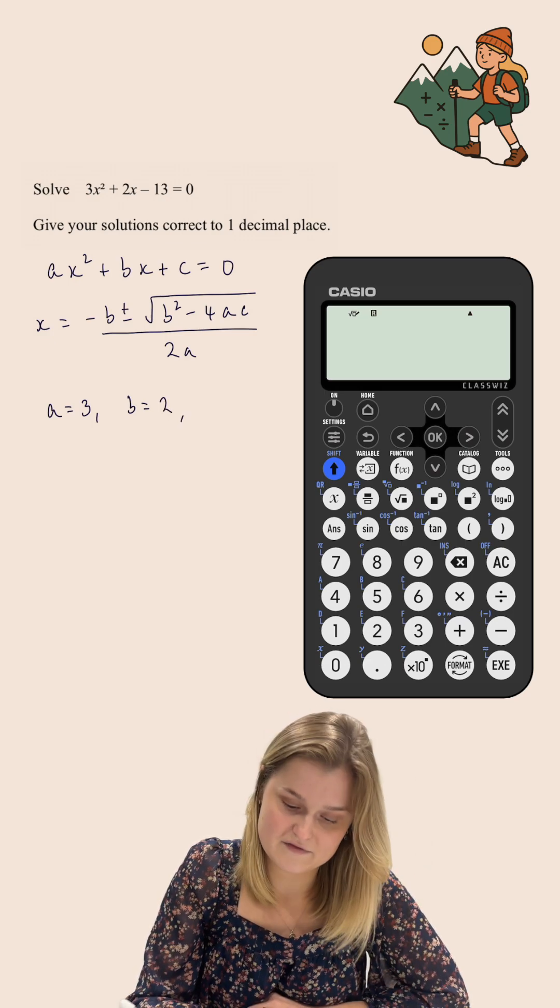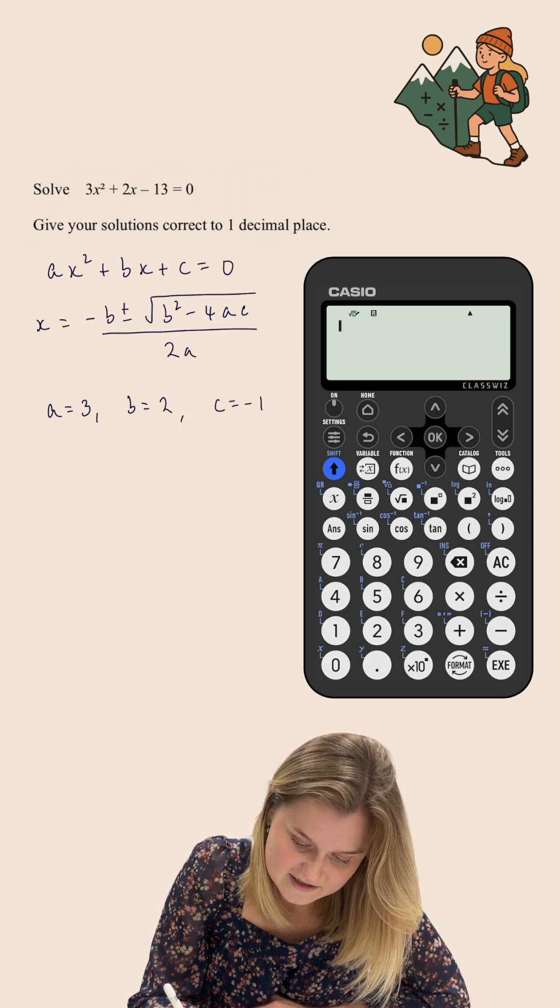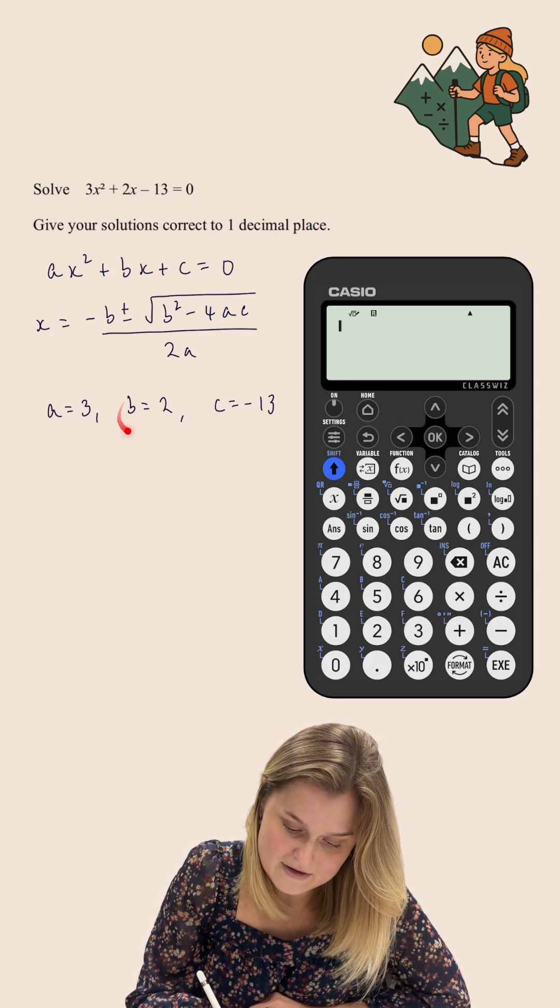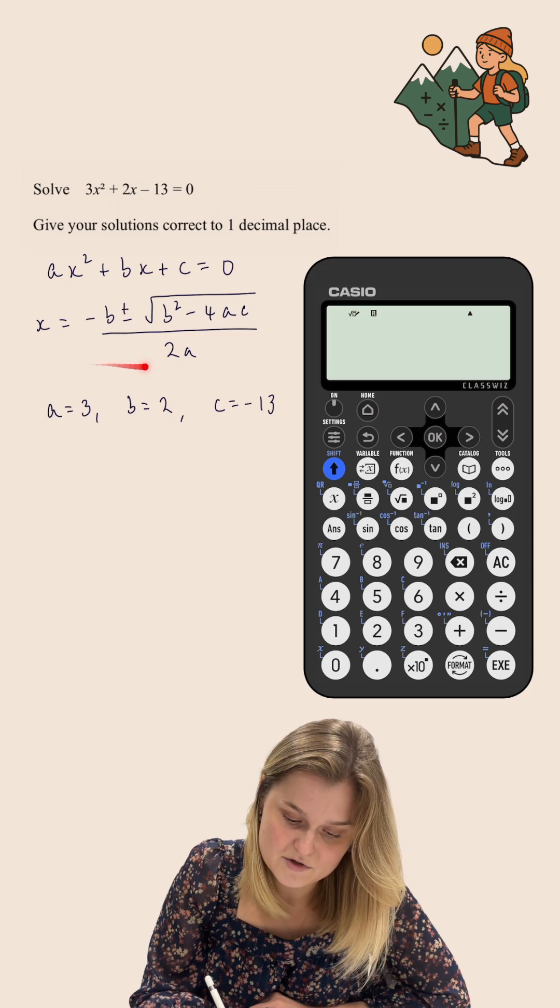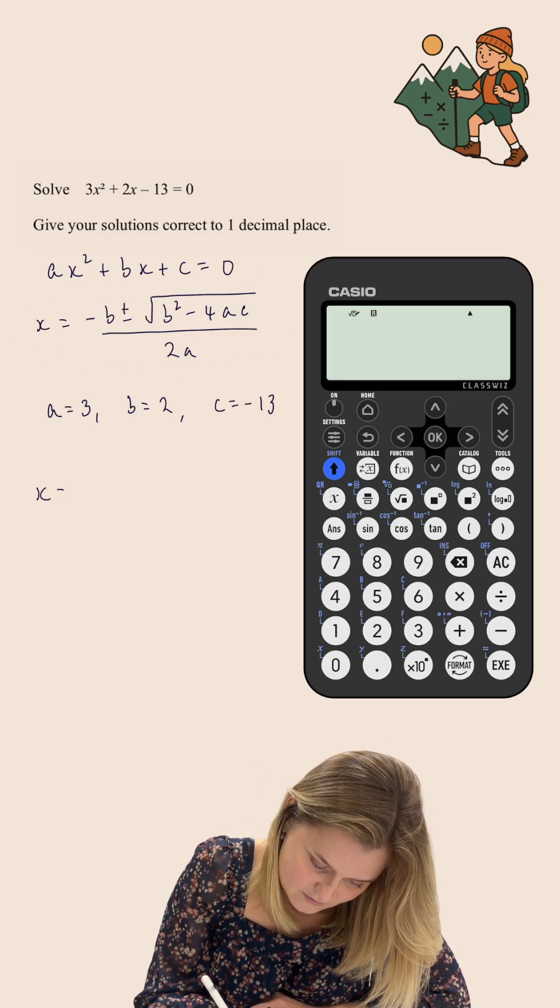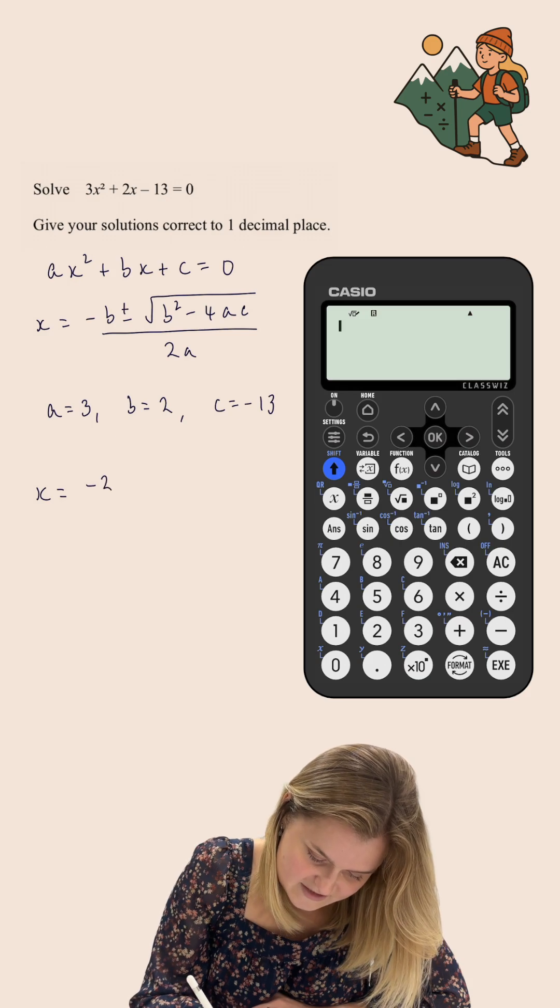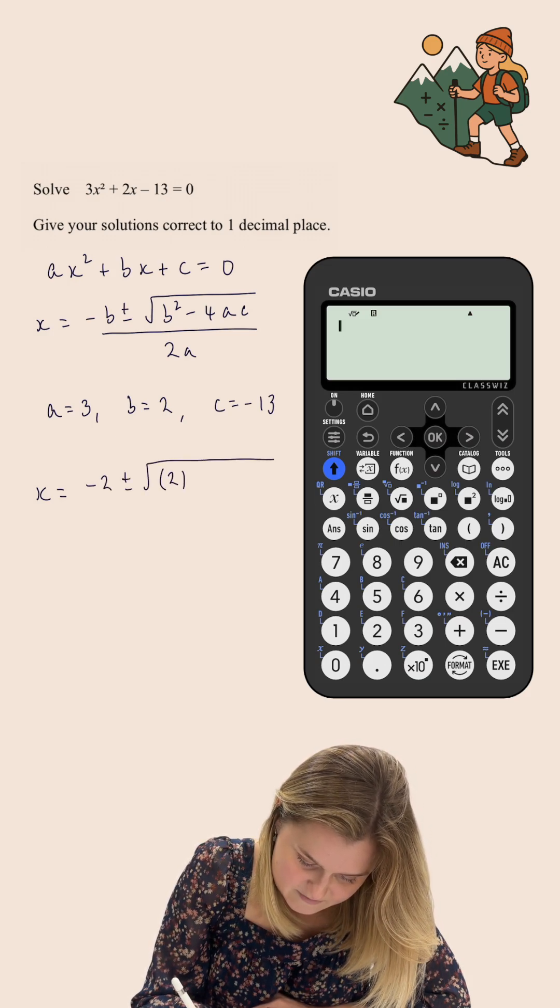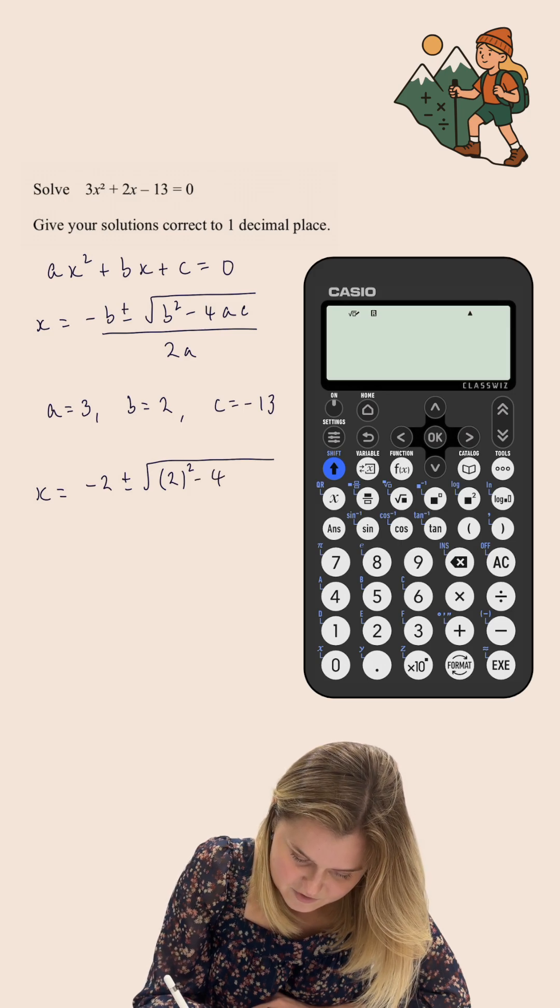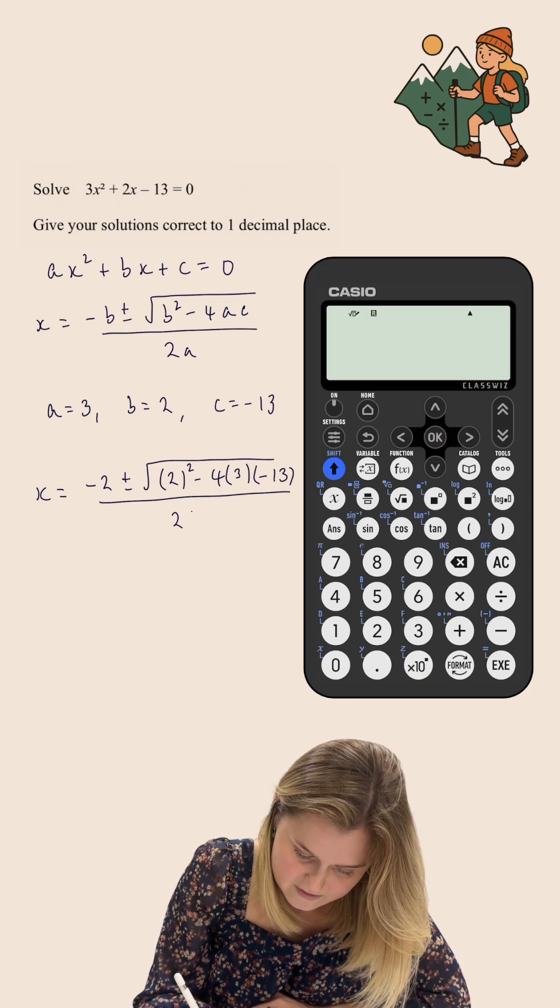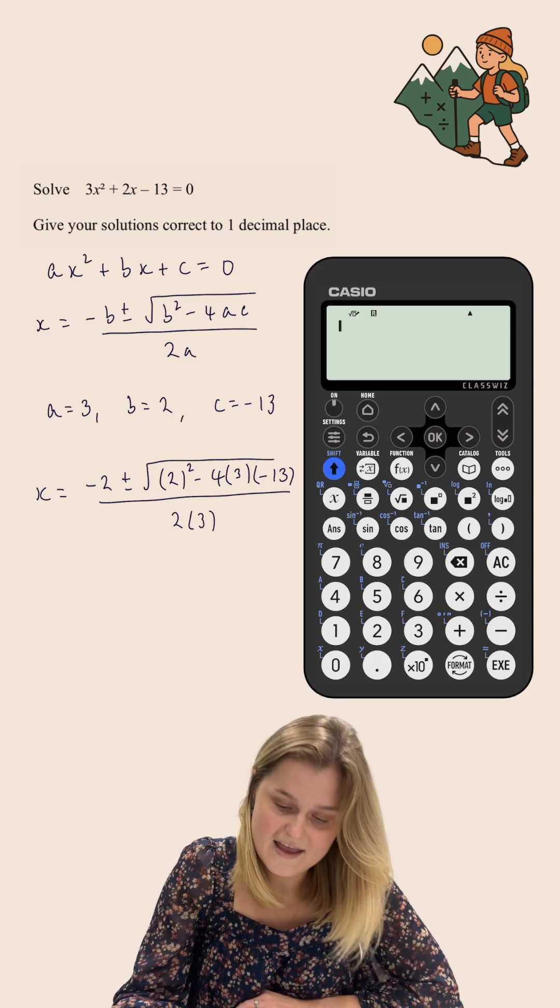and c is equal to -13. Now I need to input these values of a, b, and c into the quadratic formula. So x = -b ± √(b² - 4ac) / 2a, which is -2 ± √(2² - 4×3×(-13)) / (2×3).